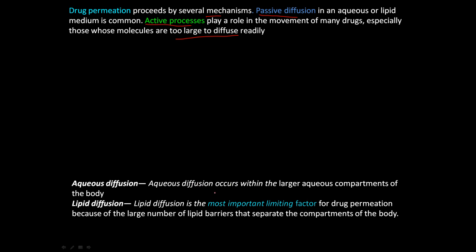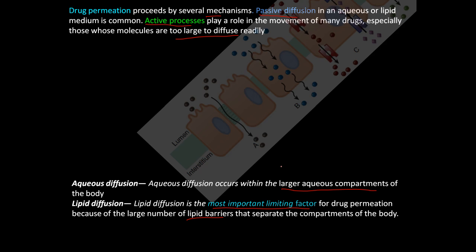So aqueous diffusion occurs within the larger aqueous compartments of the body. And lipid diffusion is the most important limiting factor of how drugs permeate because of the large number of lipid barriers that separate all the compartments of the body.